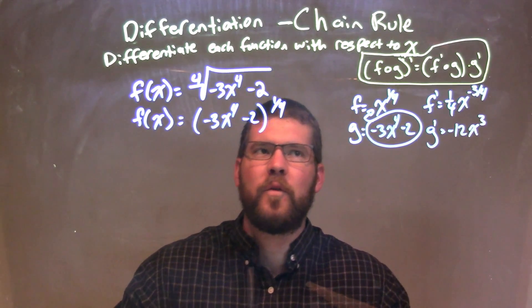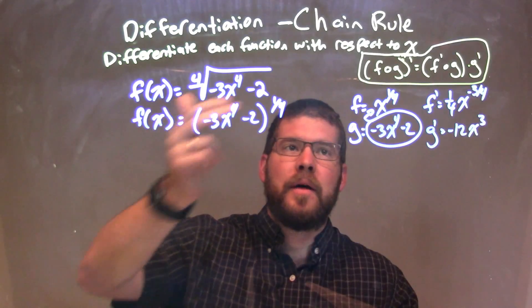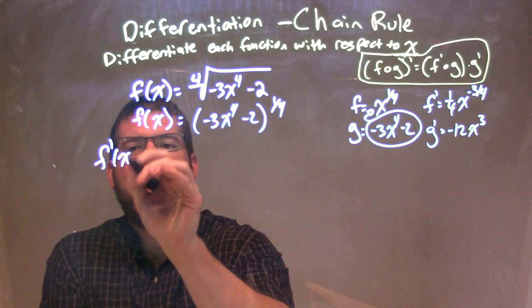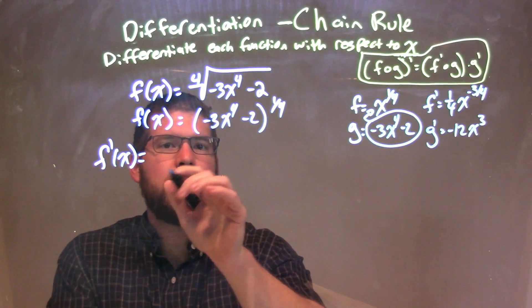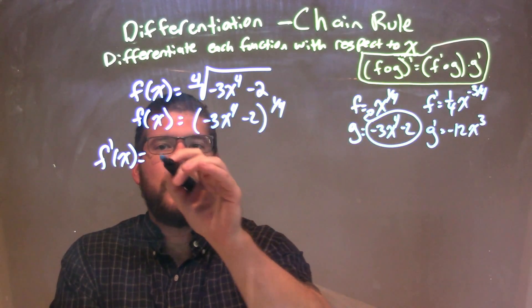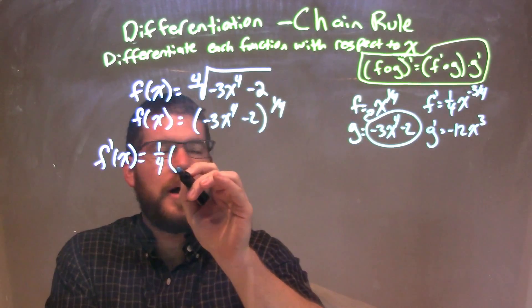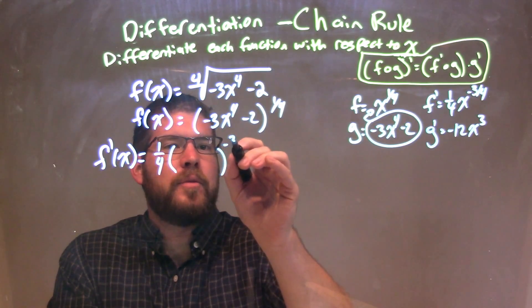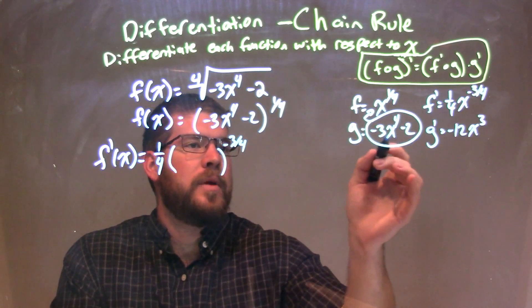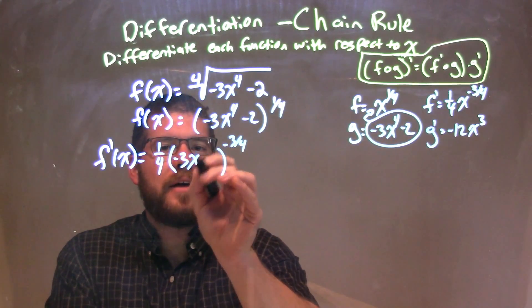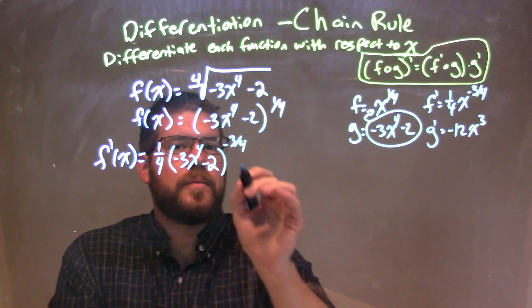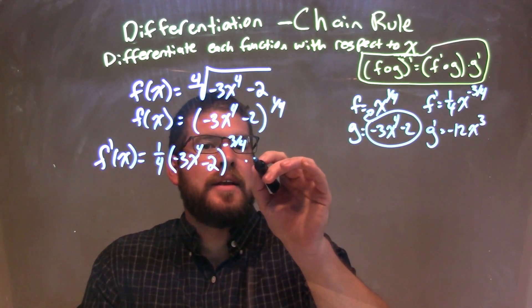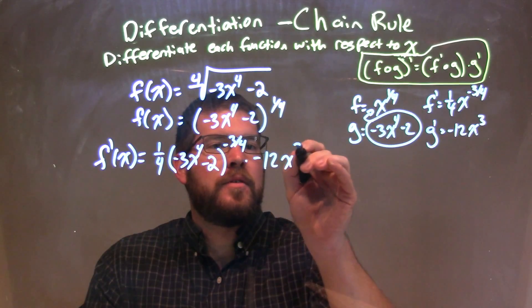So now I want to find my derivative by the chain rule and use my formula up there. So we have f prime of x is equal to f prime of g. So f prime being one-fourth times parentheses, whatever is my g, all to the negative three-fourths power. g we know to be negative 3x to the fourth minus 2. And we multiply that by g prime, which is negative 12x to the third.